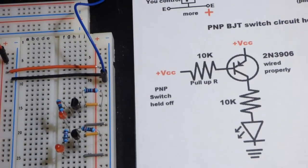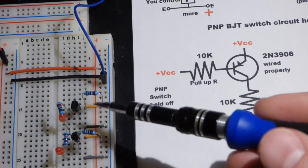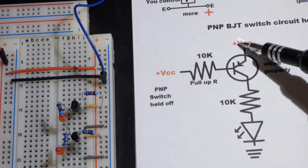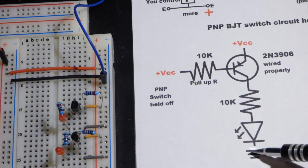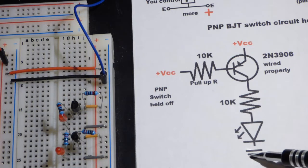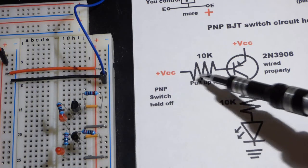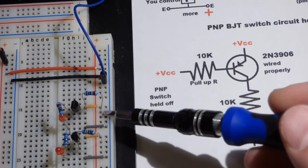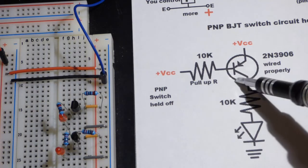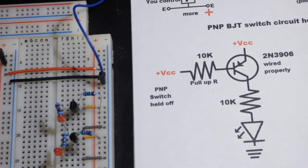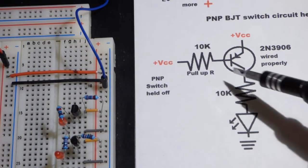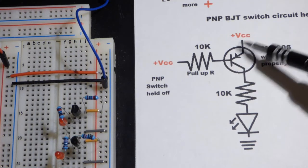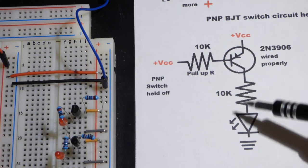And so we have up here a PNP transistor wired the right way. So it's wired like this. The emitter is more positive, and the collector side of the transistor is more negative. We are going to use a pull-up resistor, 10 kilo-ohms, to hold the voltage to the positive rail, which should help keep the transistor off.